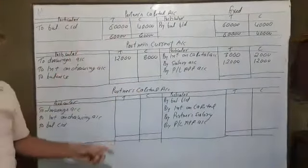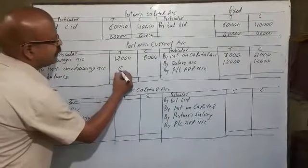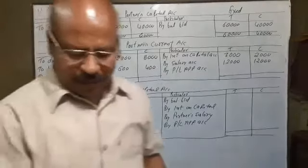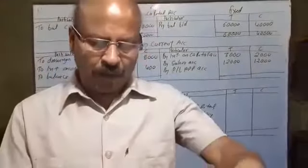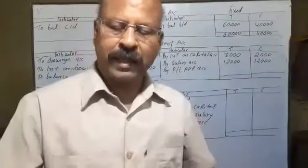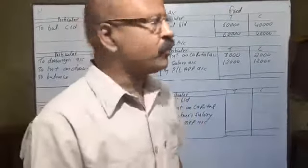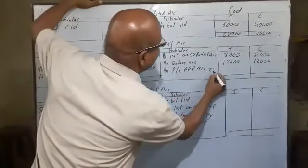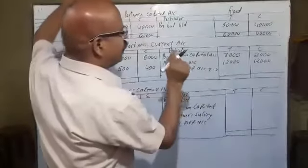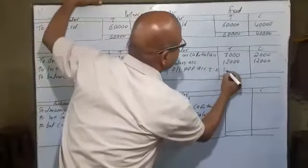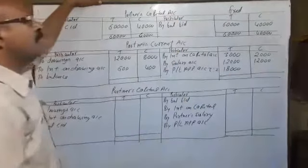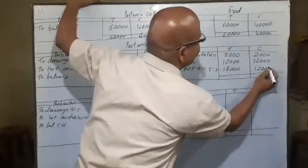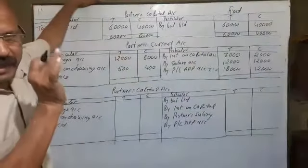Interest on drawings: 12,000 at 5% is 600 and 8,000 at 5% is 400. After all appropriation, partnership firm profit is 30,000. Profit sharing ratio is 3:2. We have to divide 30,000: 30,000 times 3/5 is 18,000 and 30,000 times 2/5 is 12,000.